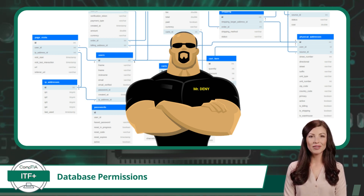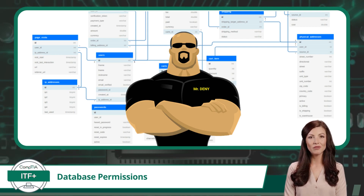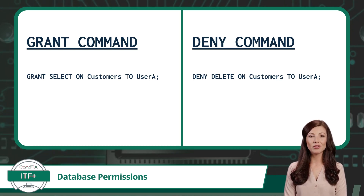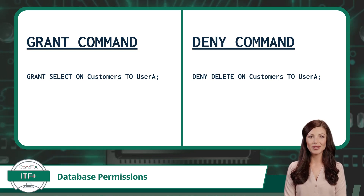Conversely, Deny can restrict your access or actions, ensuring that only authorized individuals can interact with and modify the database's organized information. To control who can or cannot work with our data, SQL gives us two commands: Grant and Deny. Grant allows access while Deny takes it away. It is also worth noting that CompTIA has classified these under the Data Definition Language, or DDL, category.